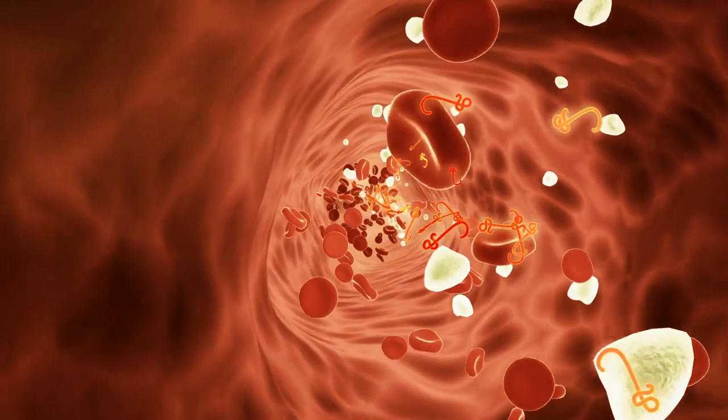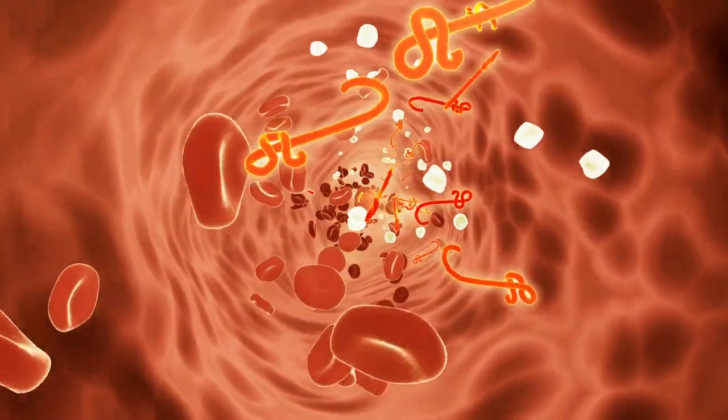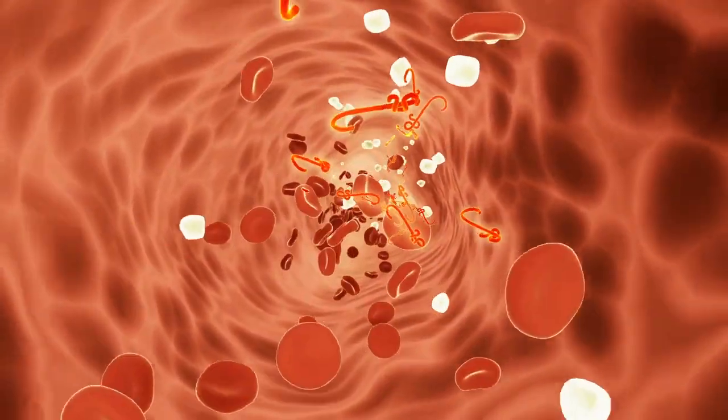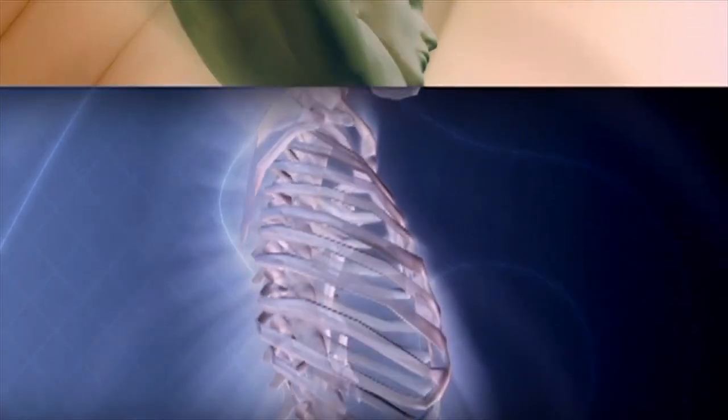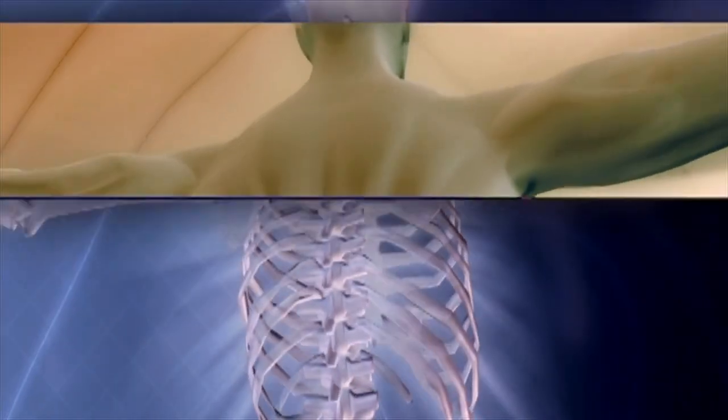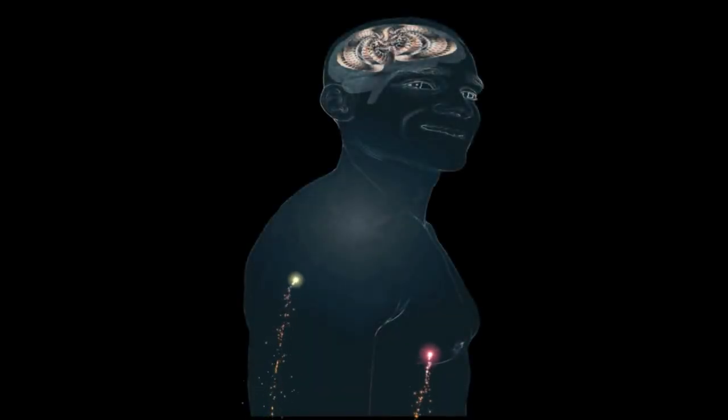When you lack the sufficient number of electrolytes, it can lose the balance of the amount of water in your body, lose the balance of your body's acid-base pH level, stop moving nutrients into your cells, stop moving wastes out of your cells, and affect how the nerves, muscles, heart and brain work.